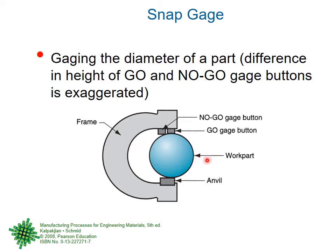If the part passes through the go side and does not pass through the no-go side, then the part is good. But if the part does not pass through the go side, or if it passes through both the go and no-go sides, then the part is bad. This is a snap-type arrangement, similar to snap locks and snap pins.